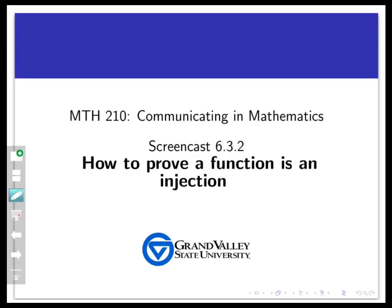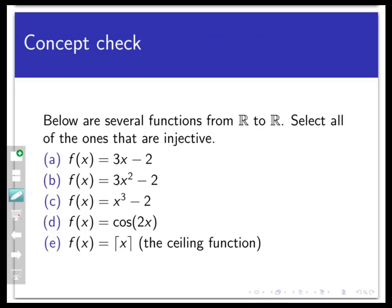Welcome back to another screencast about injective functions. At the end of the previous video, we had a concept check asking you to determine which of five functions from the real numbers to the real numbers was injective. We found it fairly easy to show a function is not injective by finding one concrete collision where two different inputs map to the same output. That was the case for functions B, D, and E. The injections were A and C, but to be completely convinced, we need to prove it, since the definition involves a universal quantifier. So this video focuses on four different strategies for proving that a function is injective.